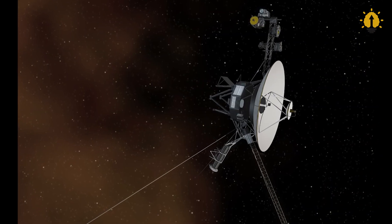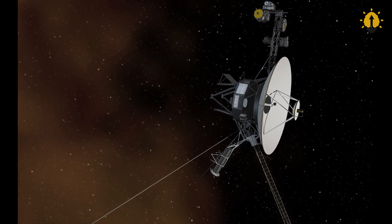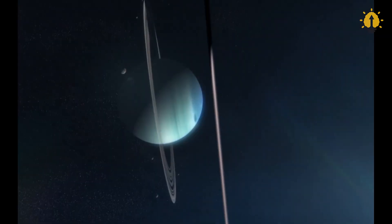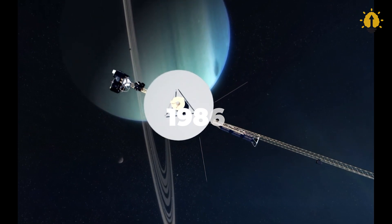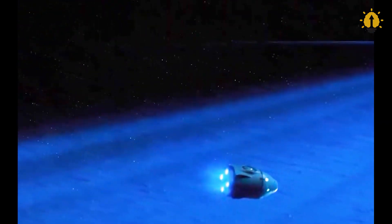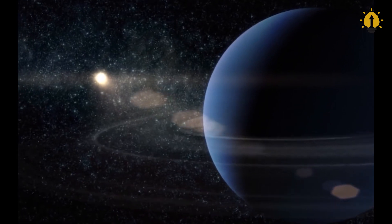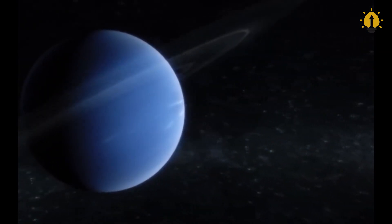Voyager 2 in particular achieved several significant milestones during its journey. It became the first spacecraft to pass by Uranus in 1986, and just three years later, it conducted a flyby of Neptune. To this day, it remains the only spacecraft to have ventured on such a path.